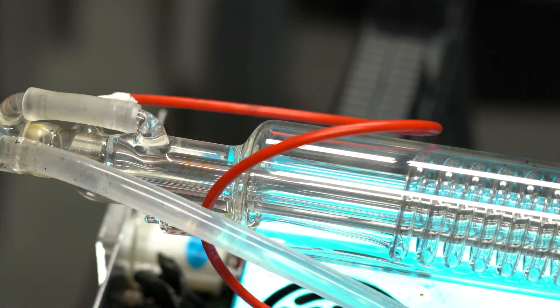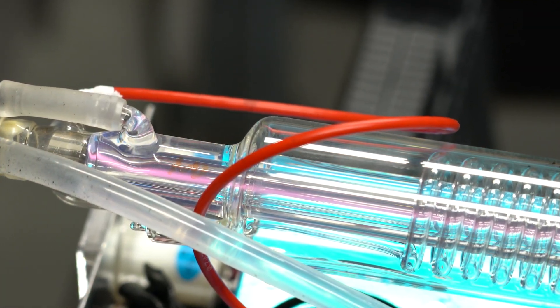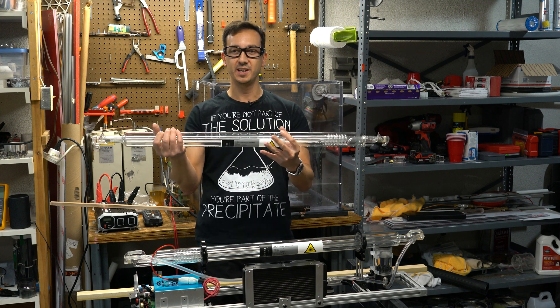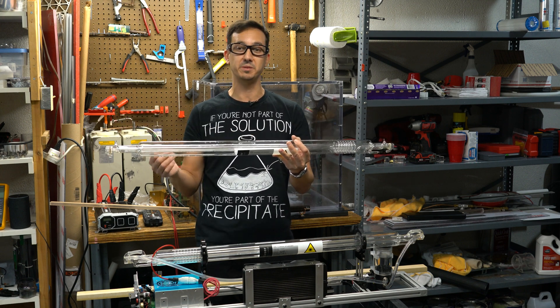Power is applied to the electrodes. The high voltage, about 25,000 volts from this power supply, excites the gas, and the gas lases. What this is, is a way of converting electricity into a 60-watt laser beam.